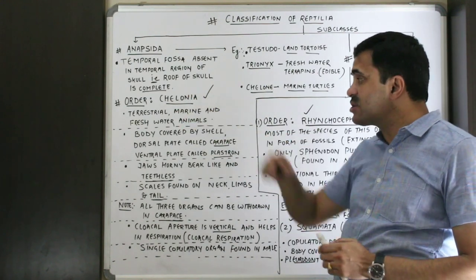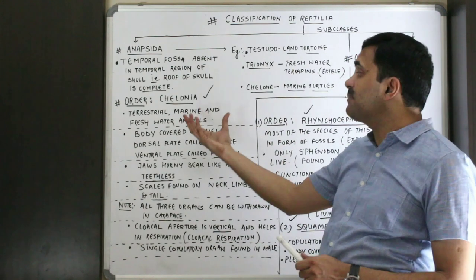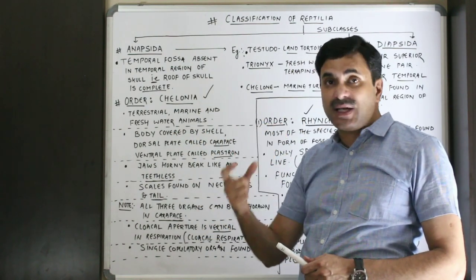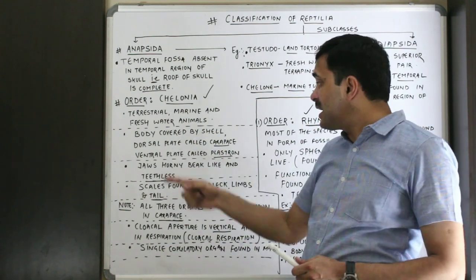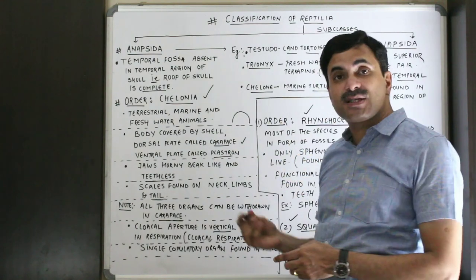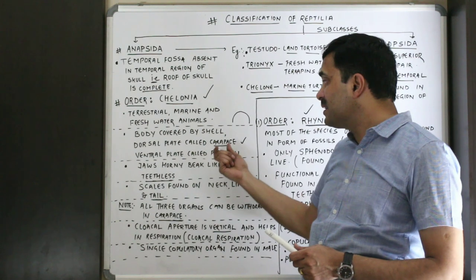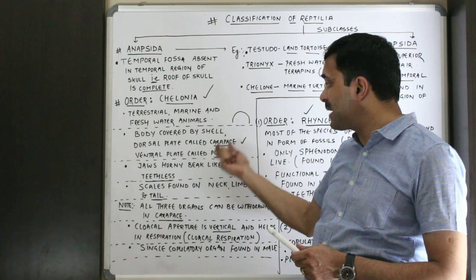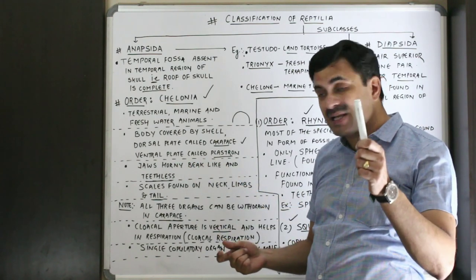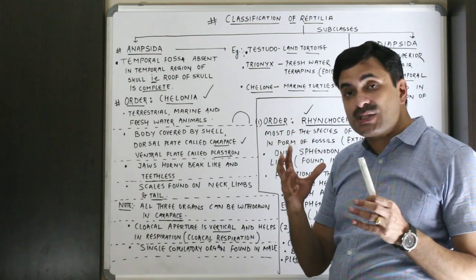Members of Order Chelonia may be terrestrial, marine, or freshwater animals. The special feature of this order is that the body is covered with a hard shell on both the dorsal and ventral surfaces. The hard dorsal plate is called the carapace — as seen clearly in the tortoise. The ventral plate is called the plastron. The jaws are horny beak-like but teeth are absent.